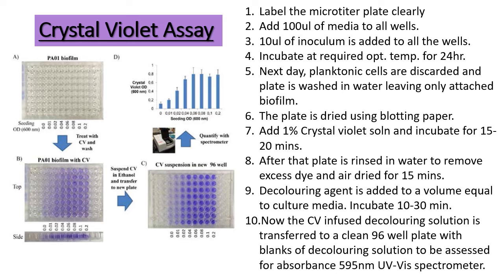An important viva question: why do we add a decolorizing solution? The objective is to stabilize the crystal violet so it can be read in the spectrometer — it acts as a medium and stabilizes it. Crystal violet absorbed by the bacteria is proportional to the number of cells in the biofilm, which is why we discard the excess crystal violet, wash and dry the plate properly, and then add decolorizing agent to retrieve only the crystal violet absorbed by the bacteria. That is how we quantify biofilm formation.